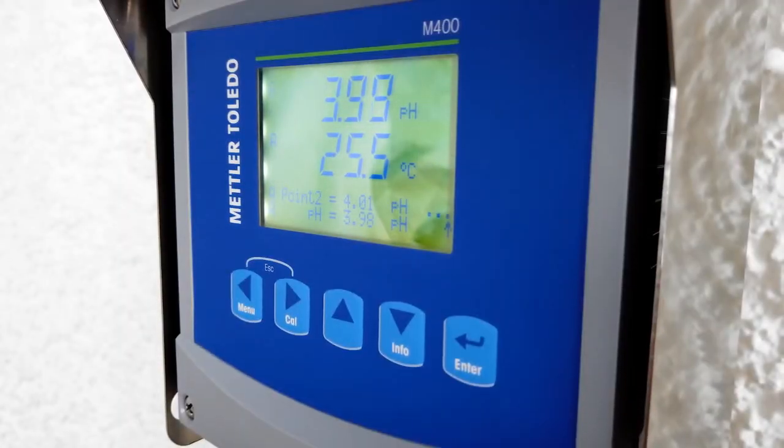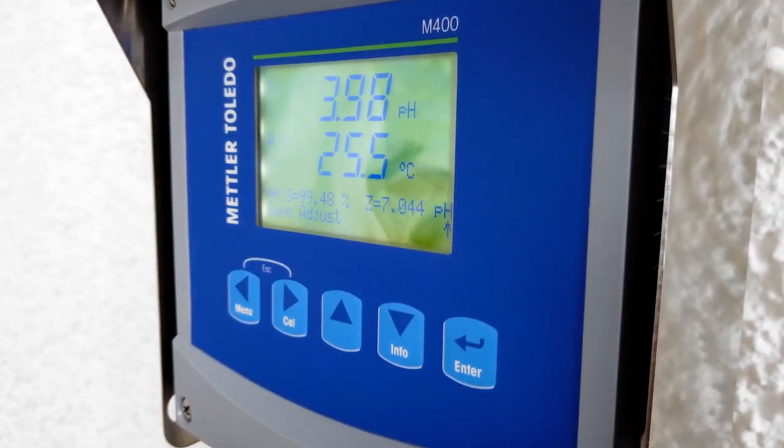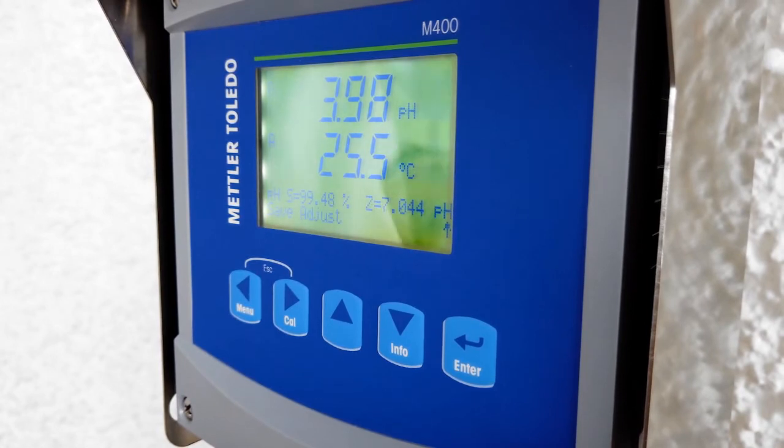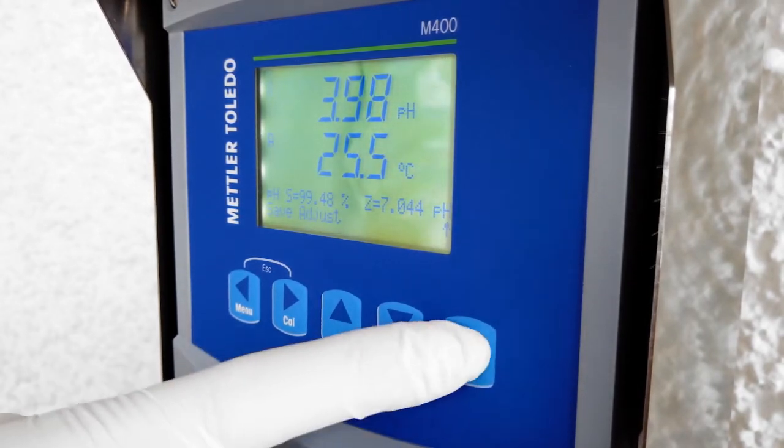Now you can see on the M400 transmitter that the sensor was calibrated with the displayed slope in percentage value and a zero point and pH value.